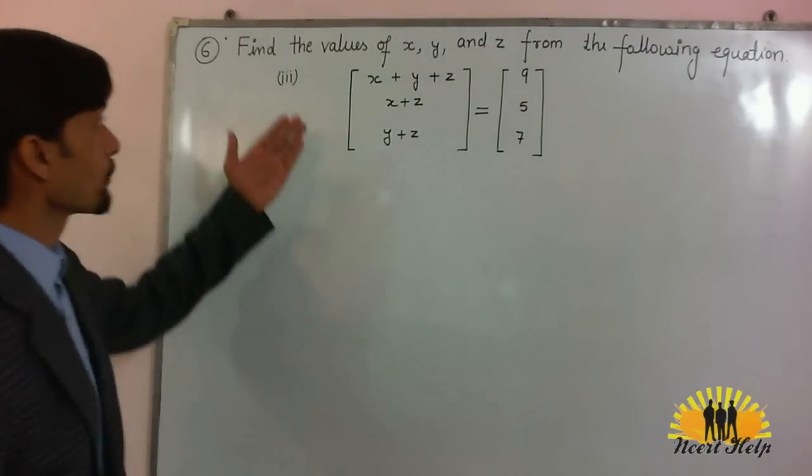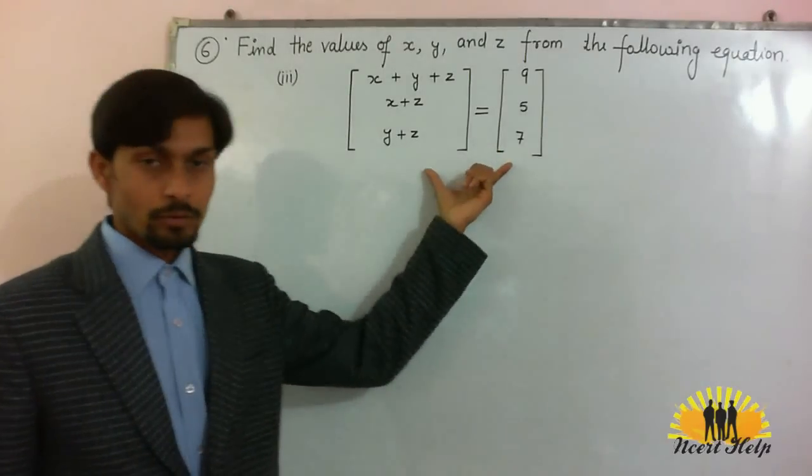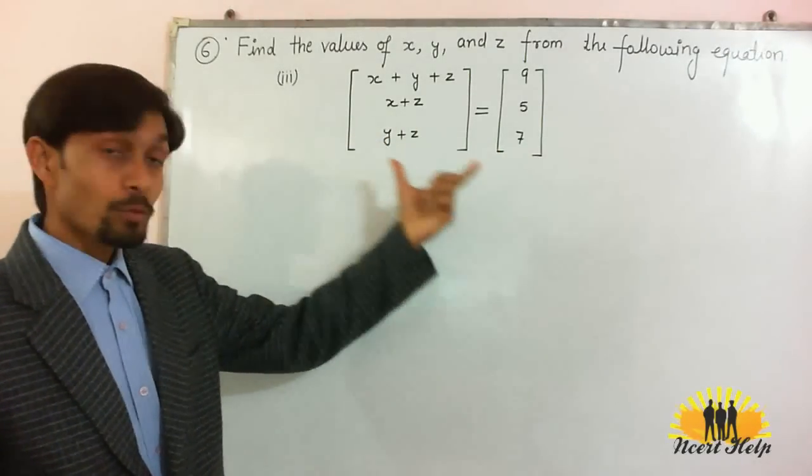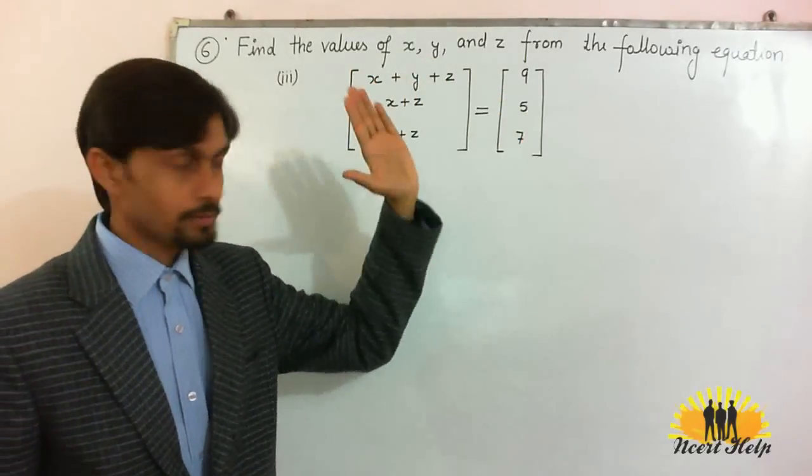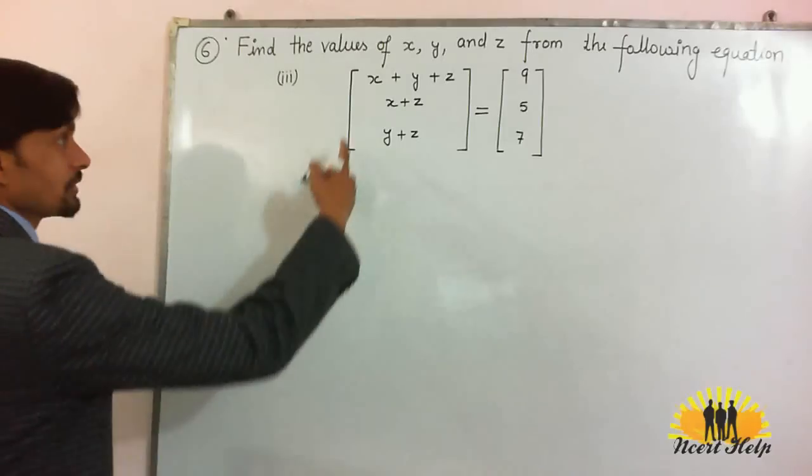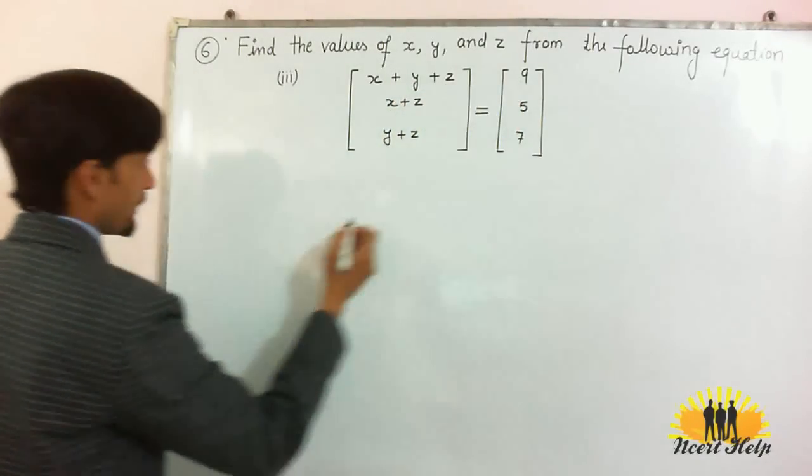Now, the third part of question number 6. Here we can see two matrices are equal. When two matrices are equal, corresponding elements are equal. So we get the equation x plus y plus z must be 9.